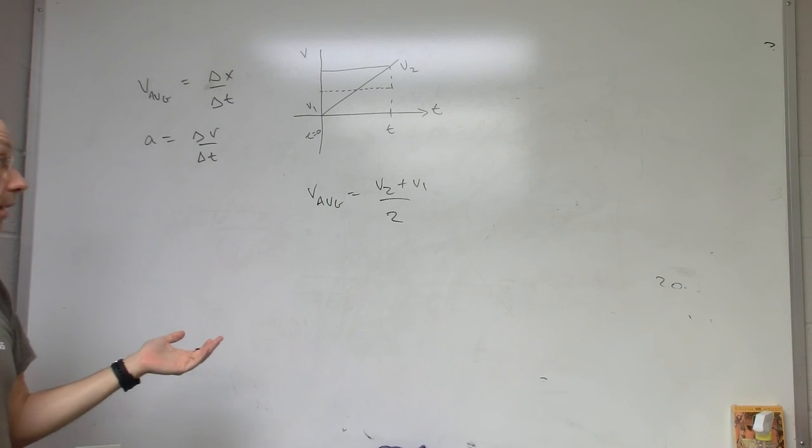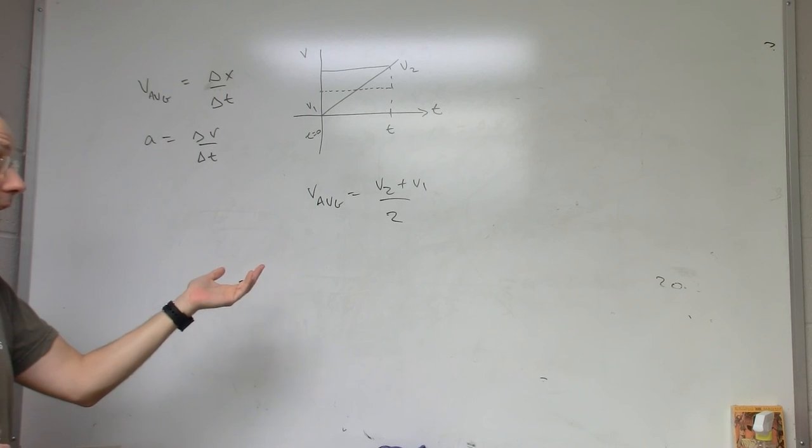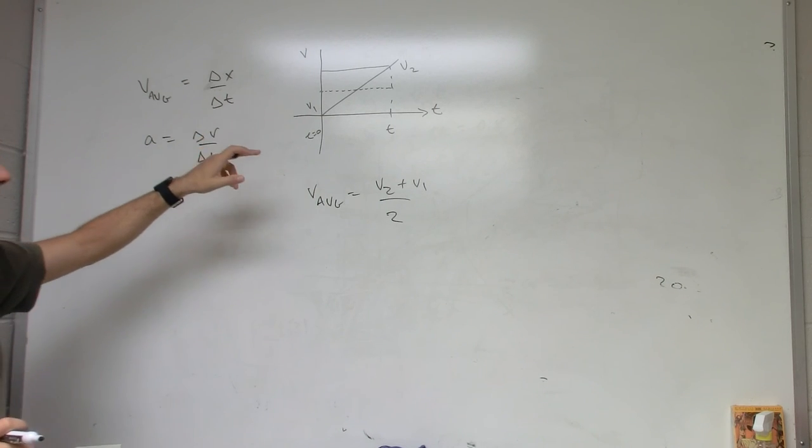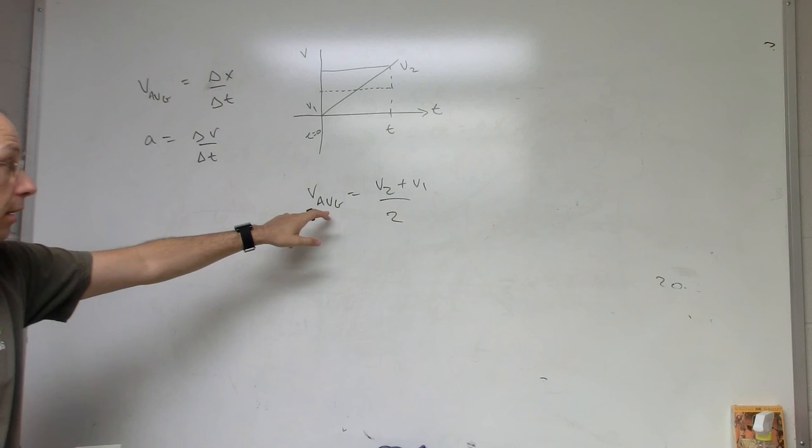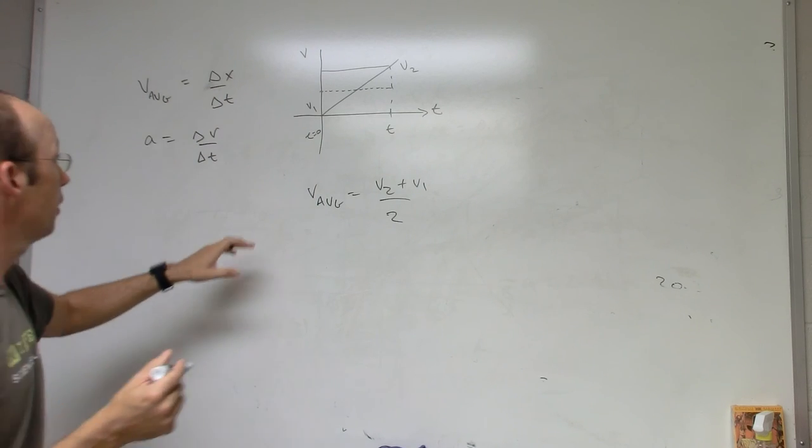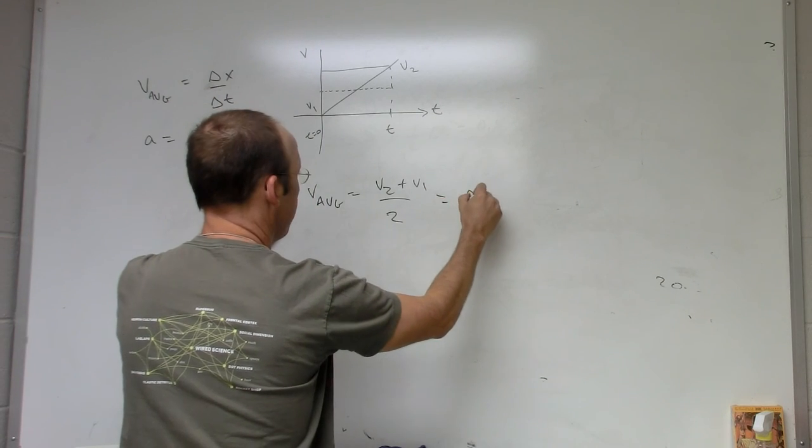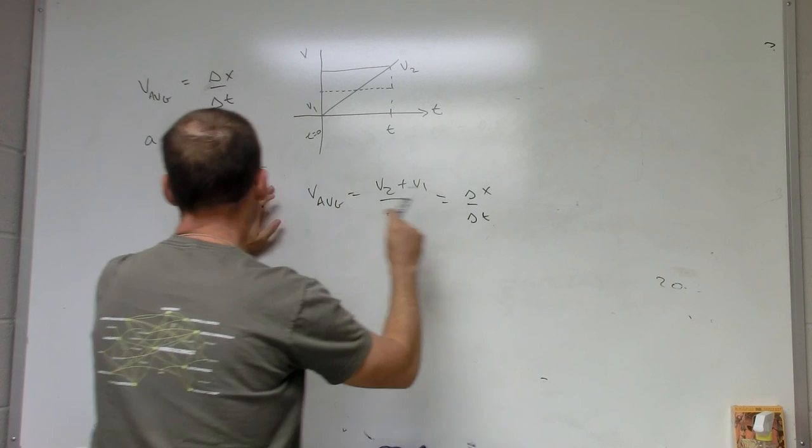And if that's constant, then I can use that, even if it's not, but that is the average velocity. But now I can use that and compare it to this right here, and so I can say delta x over delta t. So I have two definitions for average velocity.